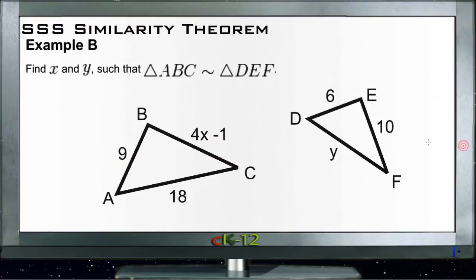Example B says find x and y such that triangle ABC is similar to triangle DEF. That tells us that A needs to be in the same ratio with D as B is to E and as C is to F, otherwise they wouldn't be similar. If we say side AB, which is the shortest side of the bigger triangle, and the shortest side of the other triangle is 6.